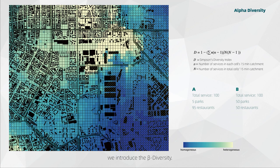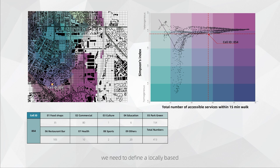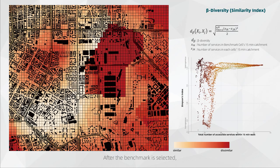Before getting the beta diversity, we need to define the local-based best cell that has more accessible services, and at the same time, these services are well balanced. Out of the cells with the nine different types of amenities available in the scatter plot, they demonstrate that cell ID 854 has the best diversity performance when homogeneity and full range of services are taken into account. After the benchmark is selected, it is crucial to make the comparison with other cells. Beta diversity describes the similarity of samples to the selected benchmark. The lower the value, the more similar the sample is.